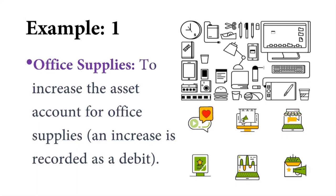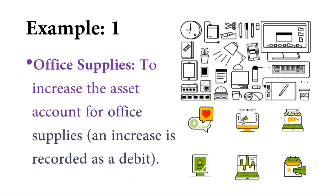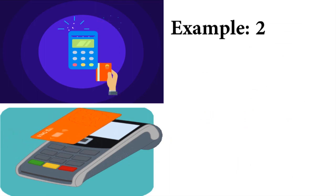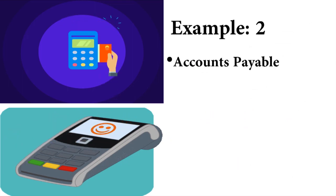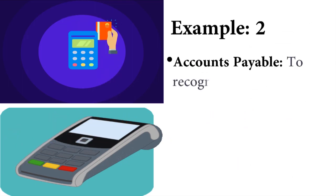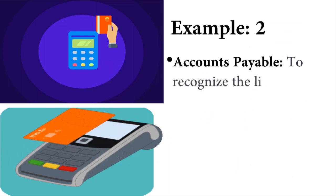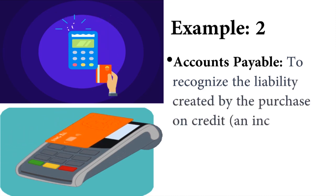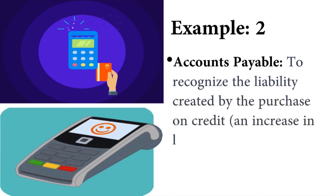Example one — office supplies: to increase the asset account for office supplies, the increase is recorded as a debit. Example two — accounts payable: to recognize the liability created by the purchase on credit, an increase in liabilities is recorded as a credit.